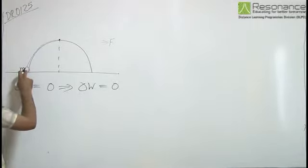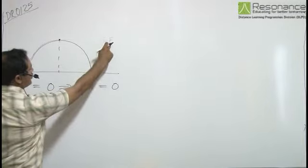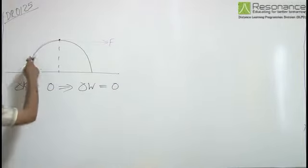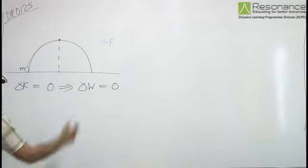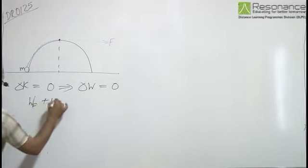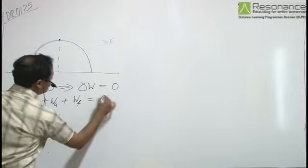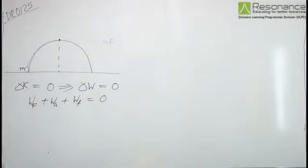Now here are the forces which are working: one is weight of the block, that is gravity is working; other is the pulling force by the person; and the third one is friction. That is, work done by F plus work done by gravity plus work done by friction sum total is equal to zero.